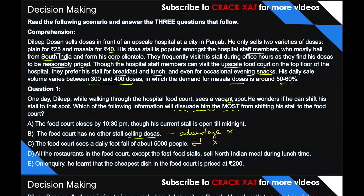Option D: all restaurants in the food court except fast food stalls sell north Indian meals — if DD is the only south Indian food option, being unique gives him an advantage, so option D is also eliminated. Option A: the food court closes by 10:30 PM though his current stall is open till midnight — but the passage mentions customers come only for breakfast, lunch, and occasionally evening snacks. So whether he stays open till midnight or not doesn't really affect his business; this is slightly out of scope.